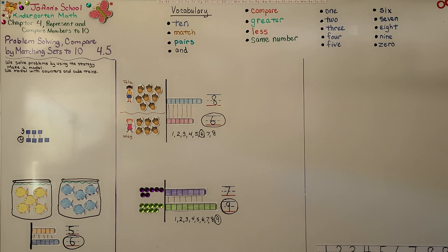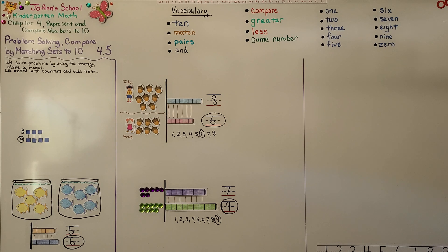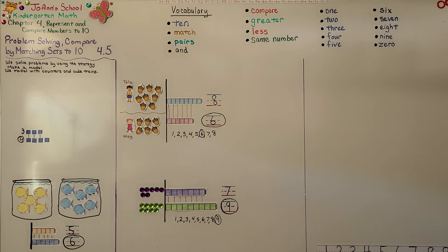So make sure as you compare by matching sets that cube trains are lining up at the black line, so they're starting at the same place. Remember, the number that comes first in counting order is fewer and the number that comes after is greater. In our next lesson, 4.6, we're going to compare numbers by counting sets to 10. We're just going to use counting. I hope you'll join me and I hope you're having a really nice day. Bye.